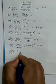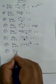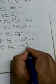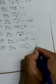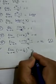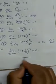Let us look at limit x tends to 0, (a plus x) whole to the power n minus a to the power n, divided by x. Also, limit x tends to infinity, 1 plus 1 by x, whole to the power x.